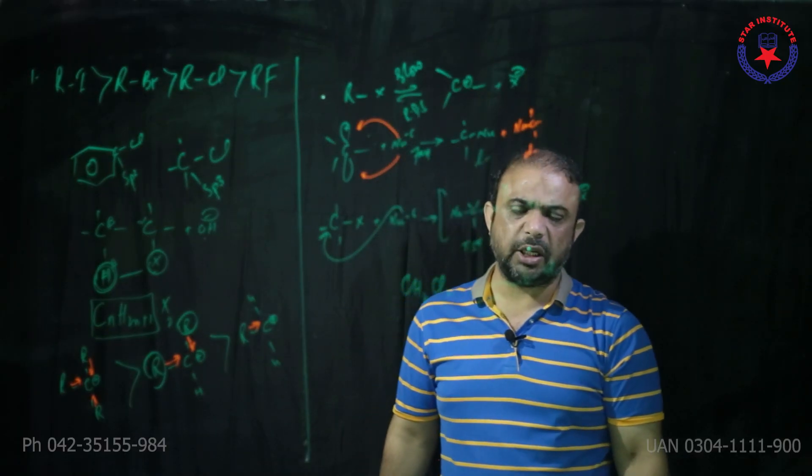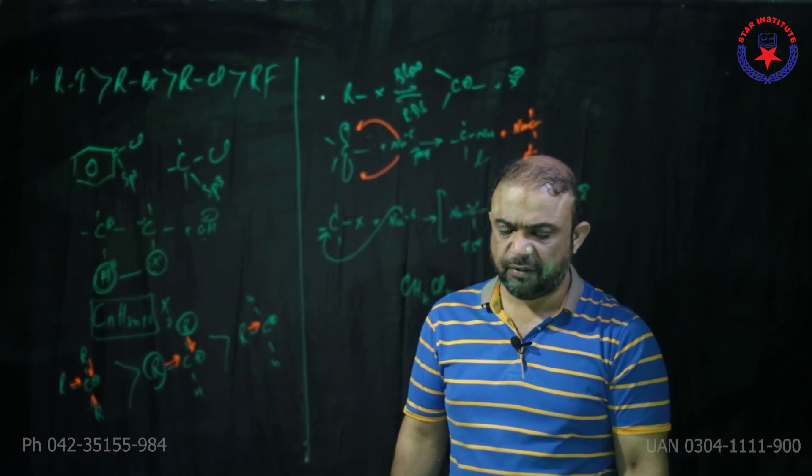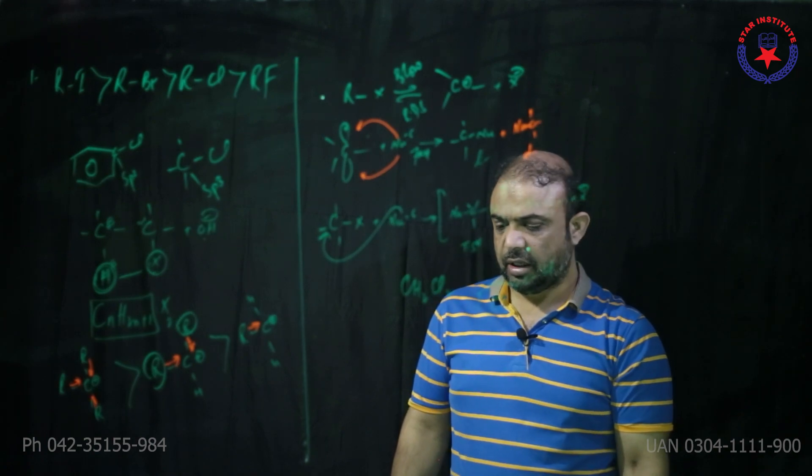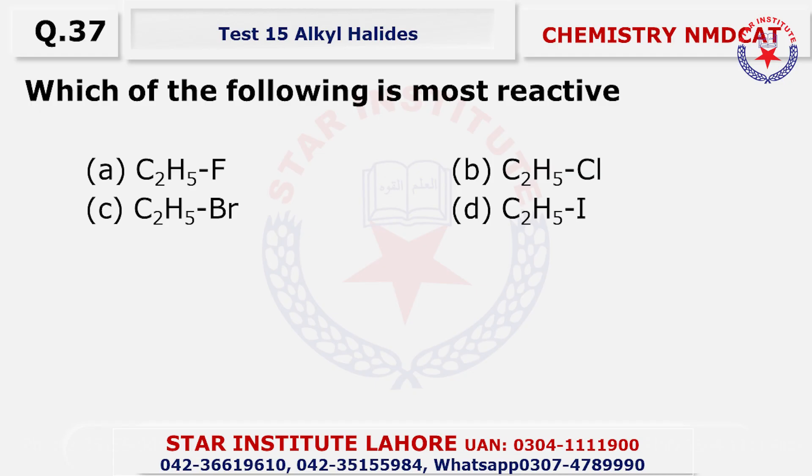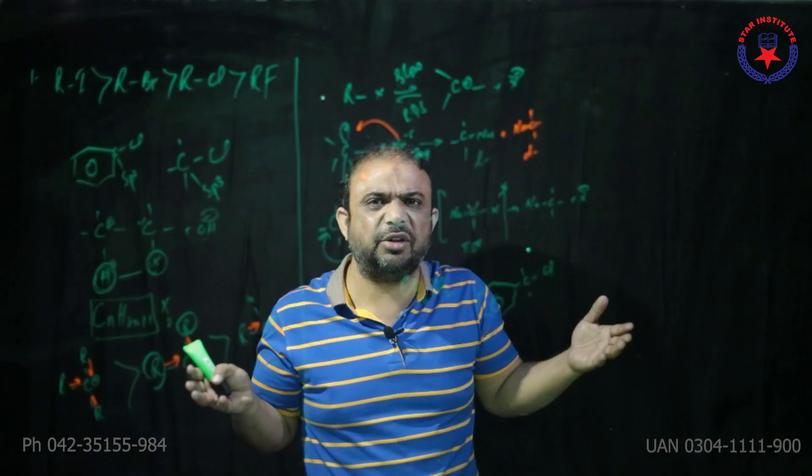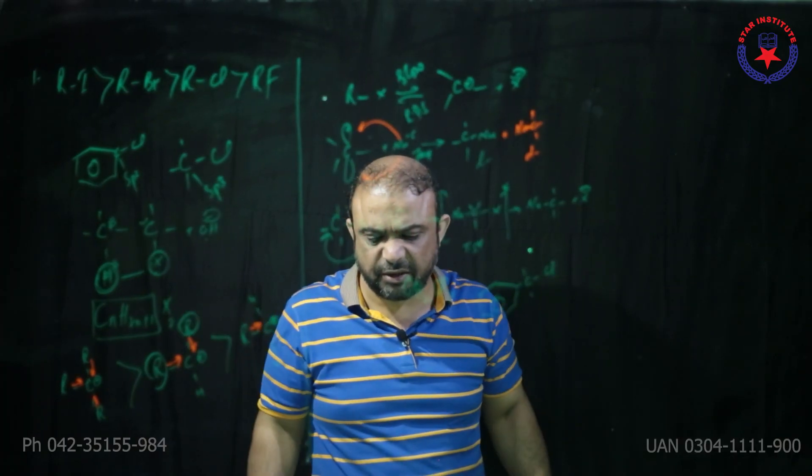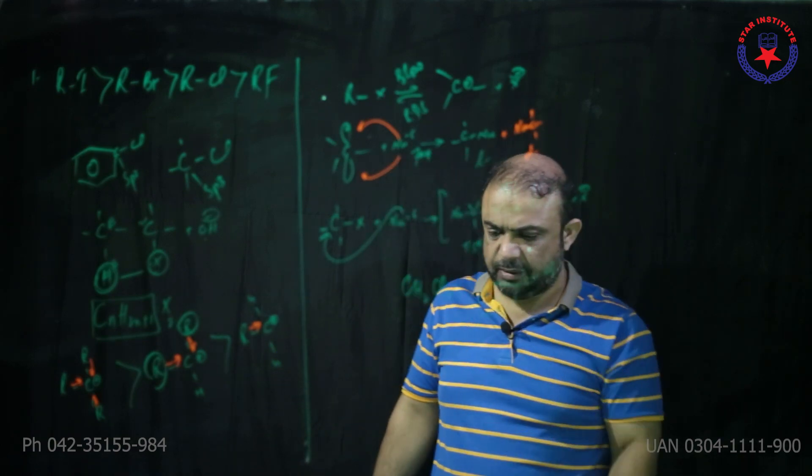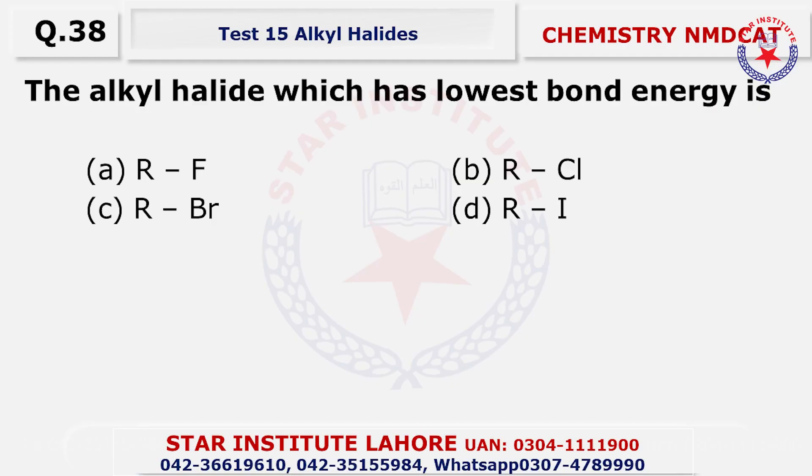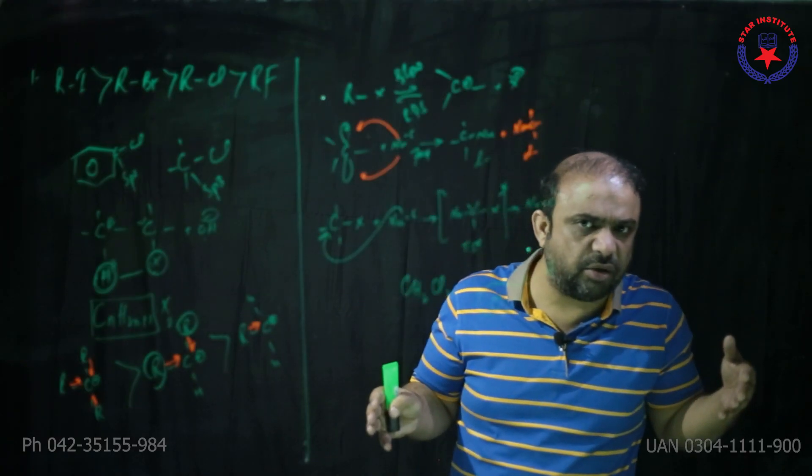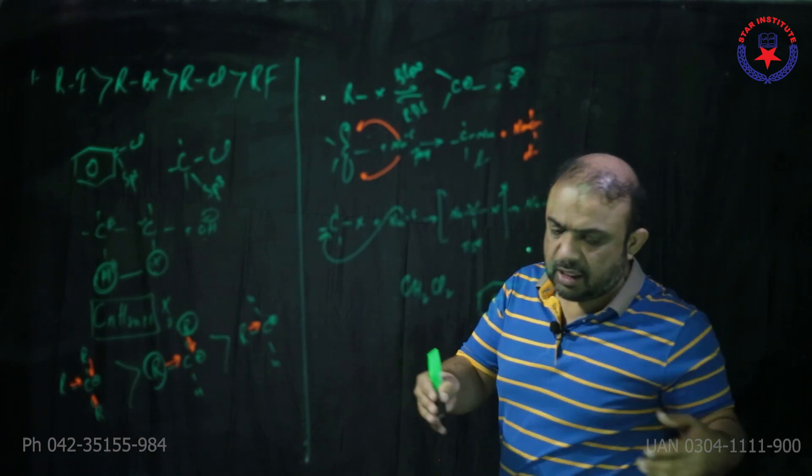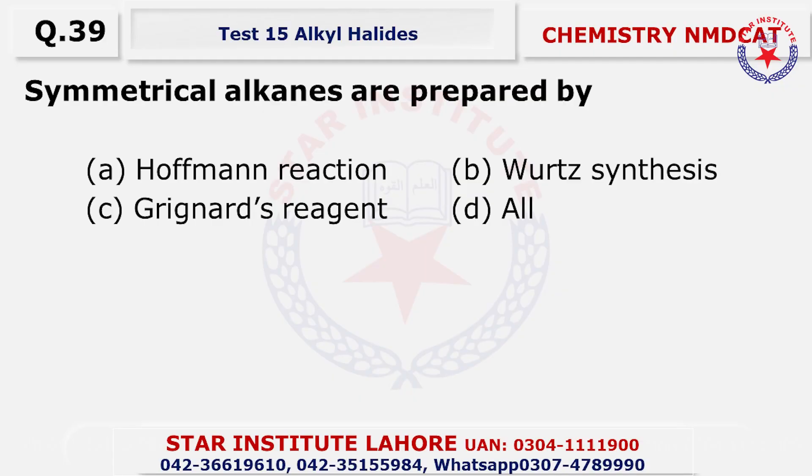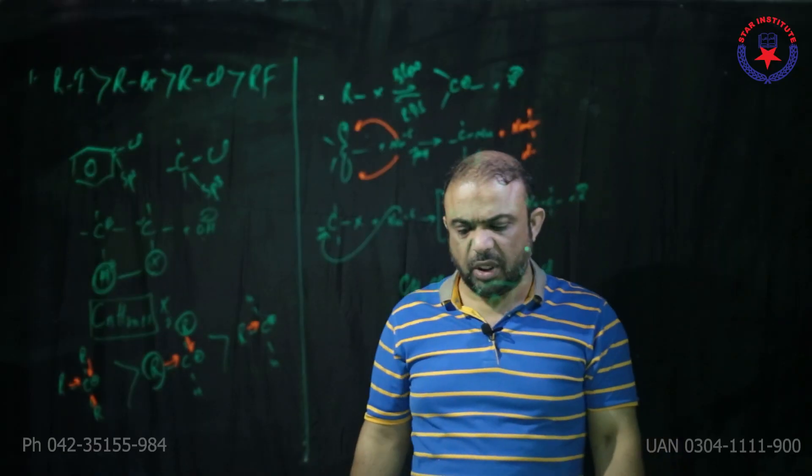Question 36, the reactivity of alkyl halides for a particular alkyl group is, toh phir wahi formula hai halogen attached to a non-halogen bigger size being more reactive so the choice is charlie. Question 37, which of the following is most reactive, toh phir wahi baat hai halogen non-halogen se attached hai jitna size bada hota jaye reactivity badhegi, alkyl iodide delta. Question 38, alkyl halide which have the lowest bond energy, toh jitna size of the halogen atom badh gaya utni reactivity zyada hogi.